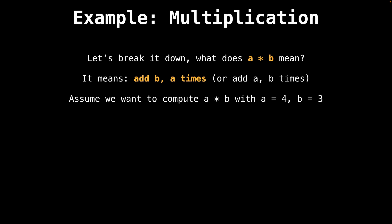Suppose we want to compute a times b, with a equals 4 and b equals 3. Well, in order to multiply a and b together, we're going to add b, a times. While doing so, we're also going to keep track of how many additions of b we have left to do. This will help us understand how to implement multiplication recursively more easily.